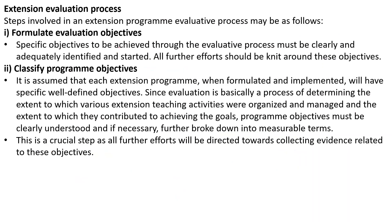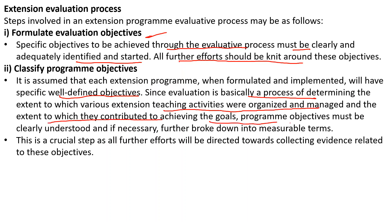The extension evaluation process involves different steps. First, formulate the evaluation objectives: the specific objectives to be achieved through the evaluative process must be clearly and adequately identified, stated, and all further effort directed around these objectives. Second, classify the program objectives: since evaluation is basically a process of determining the extent to which extension teaching activities have been organized and managed and have contributed to achieving goals, every objective needs to be classified according to program performance.